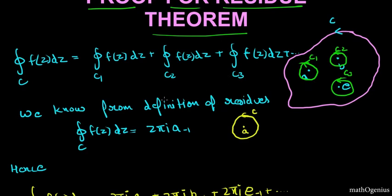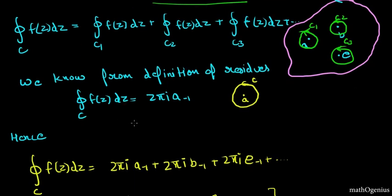I have told you this in detail in the proof of Cauchy integral theorem and its consequences. And also we know that residue at a point is equal to 2πi times a_{-1}, where a is the singular point and a_{-1} is the residue at that point.